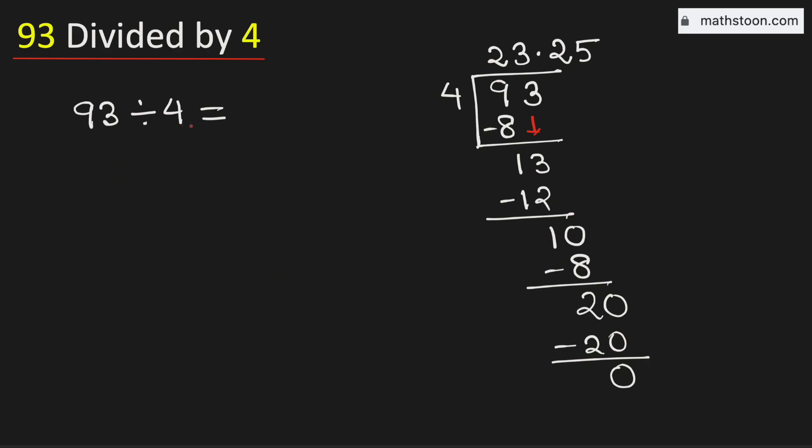Therefore, 93 divided by 4 is equal to 23.25. And this is our final answer.